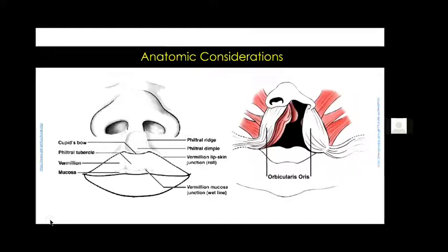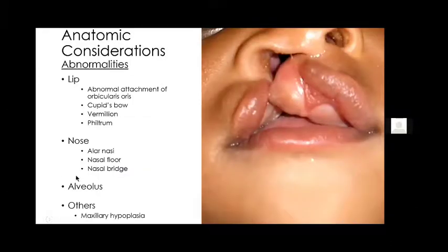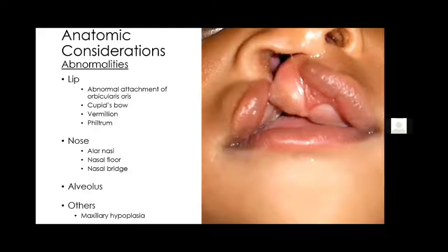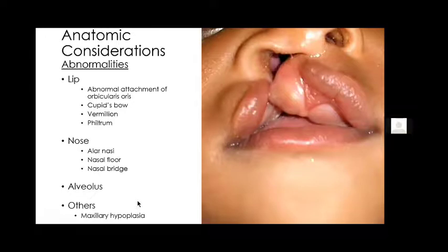To highlight the issues with the lip: the abnormal attachment of the orbicularis oris to the edges of the cleft means the cupid's bow is distorted. The cupid's bow is one of the anatomical landmarks that makes the lip look nice. The vermilion border is also disrupted, the philtrum is obviously disrupted, the ala nasi is also abnormally attached, the floor of the nose when involved is disrupted, and the nasal bridge often deviates to one side. When the alveolus is affected, there are implications for where the upper incisors will emerge. For very wide clefts, there may be some degree of hypoplasia of the maxilla on the cleft side.